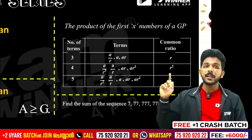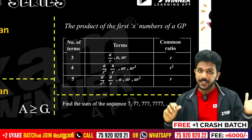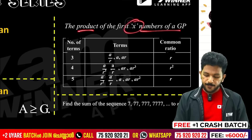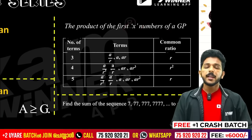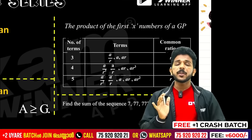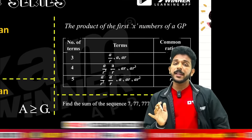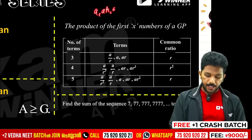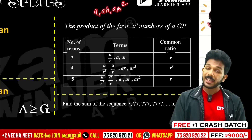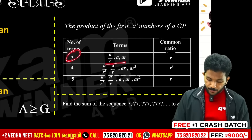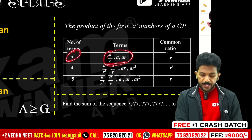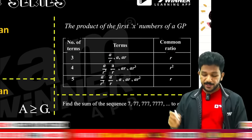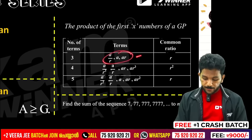This is very important. The product of the first few terms of a GP — if we have 3 terms in a GP, multiply them. The three terms are taken as a/r, a, and ar — then their product simplifies nicely. The ratio is r.